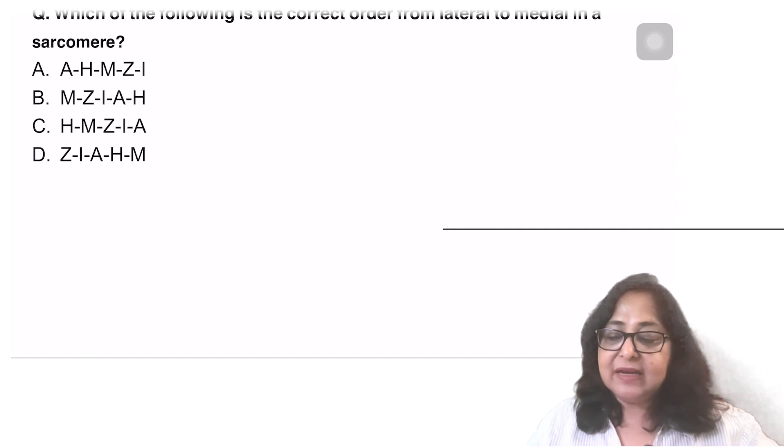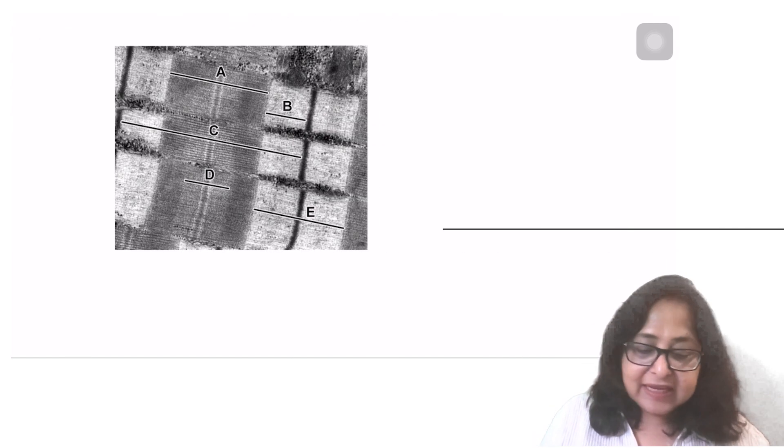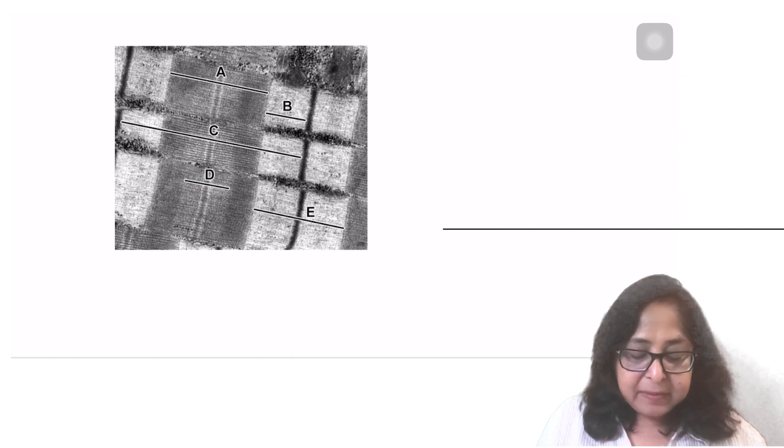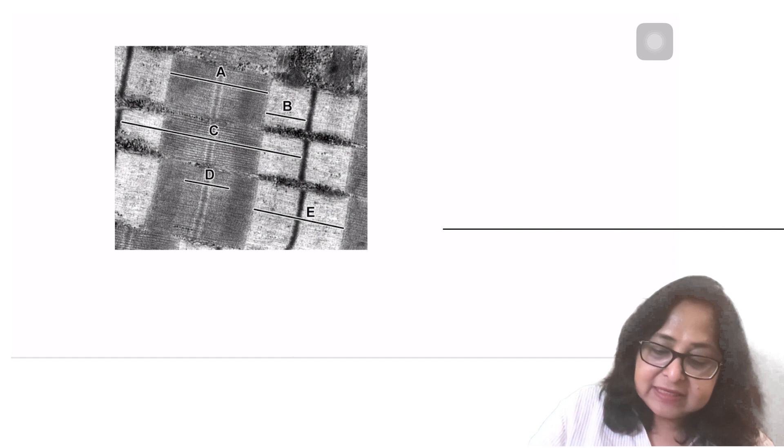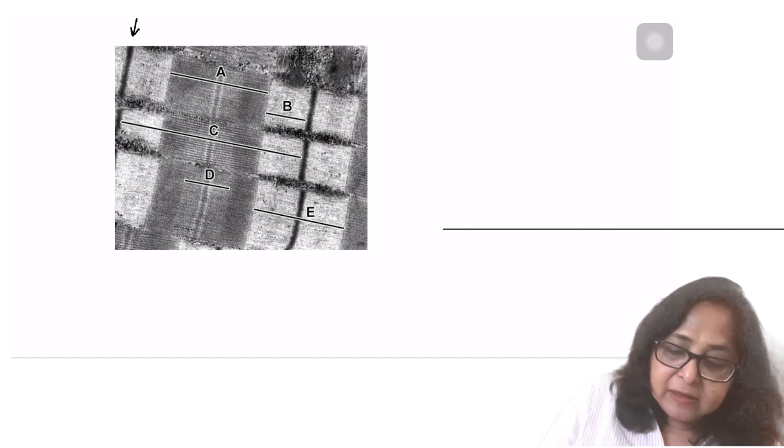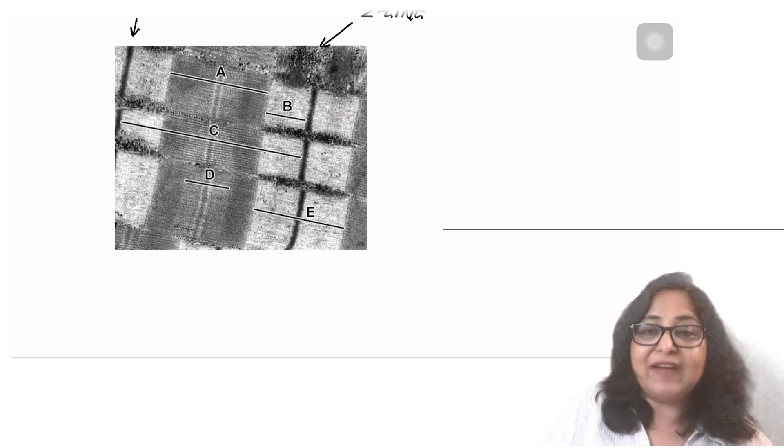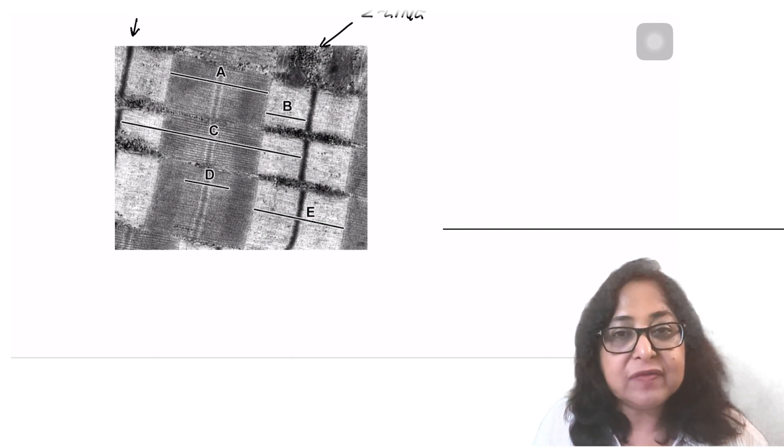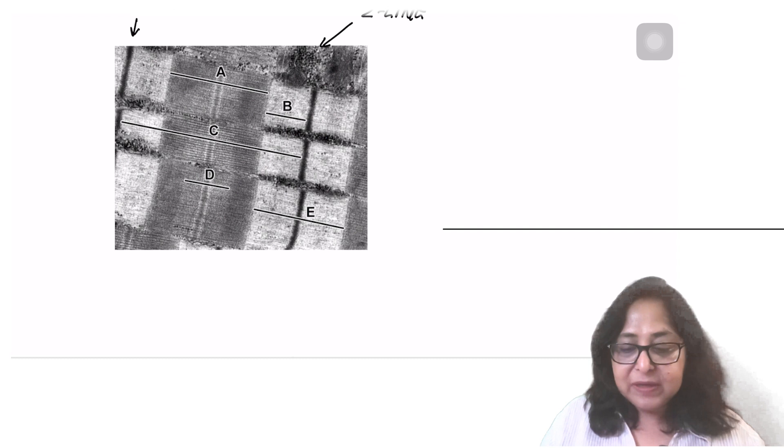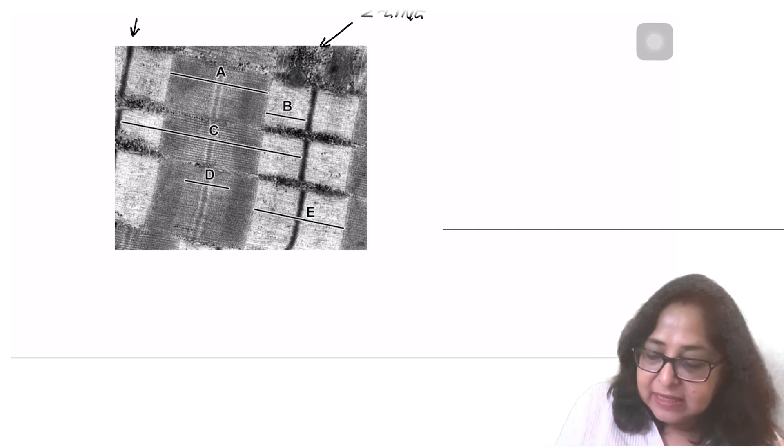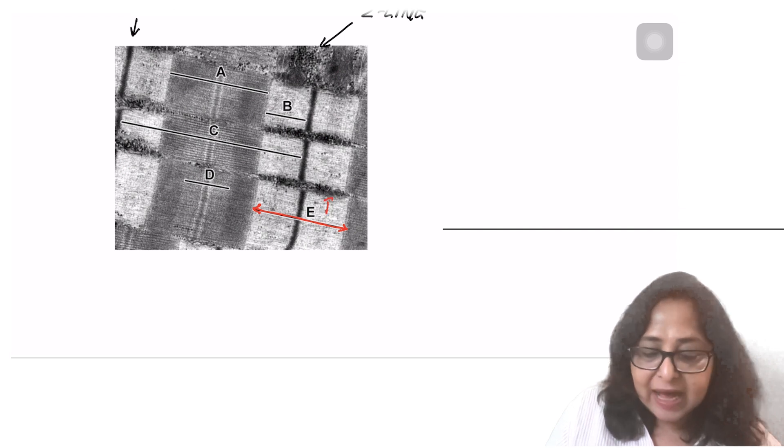Let's look at the next question. It says, which of the four is the correct order from lateral to medial in a sarcomere? When I look at the image of the sarcomere, we find here is the Z line and this is another Z line. Between the two Z lines, you have the structural and the functional unit of the skeletal muscle, which is the sarcomere.